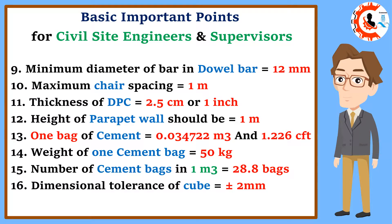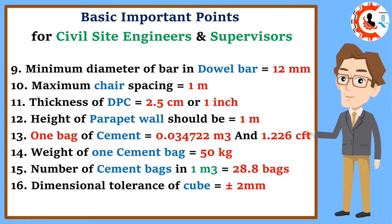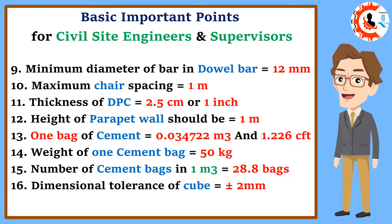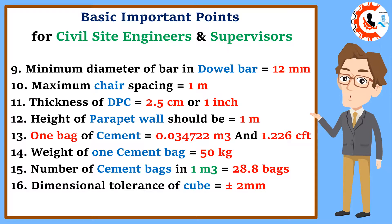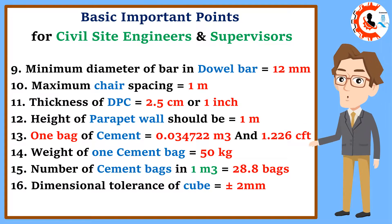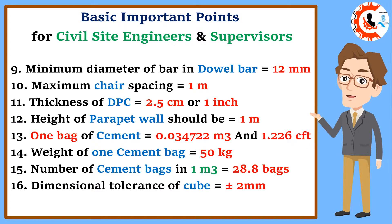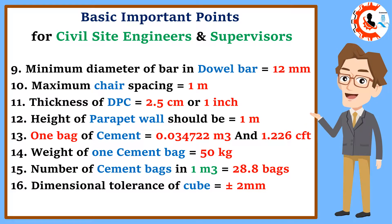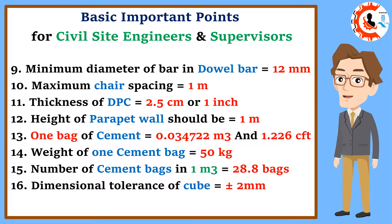11. Thickness of DPC equals 2.5 centimeters or 1 inch. 12. Height of parapet wall should be 1 meter. 13. One bag of cement equals 0.034722 cubic meters and 1.226 cubic feet. 14. Weight of one cement bag equals 50 kilograms. 15. Number of cement bags in one cubic meter equals 28.8 bags. 16. Dimensional tolerance of cube equals plus and minus 2 millimeters.